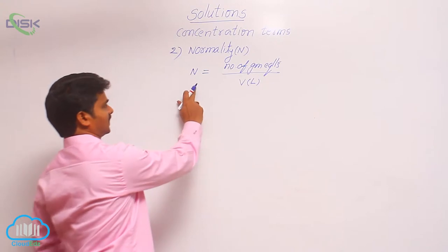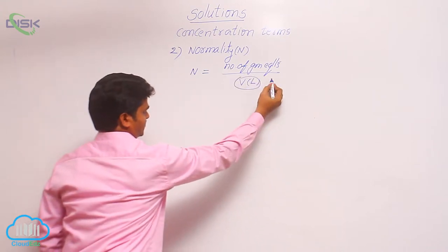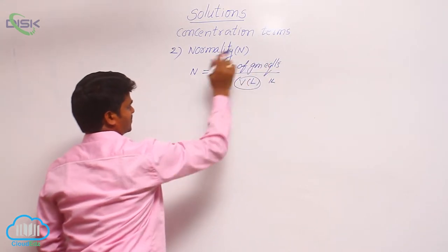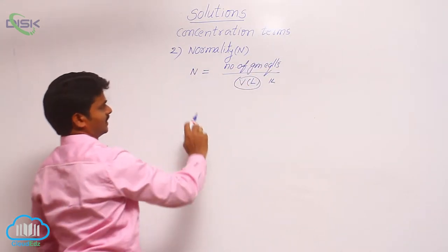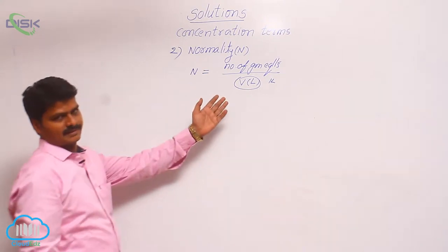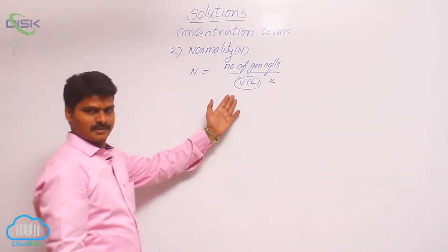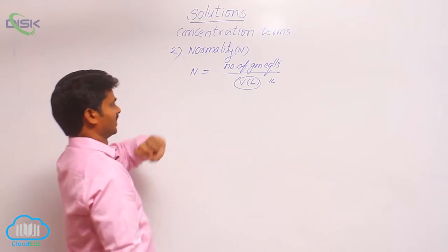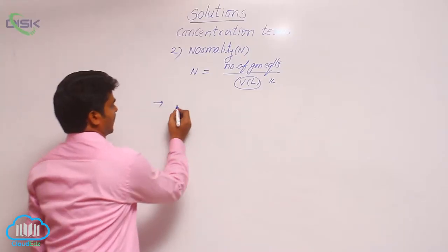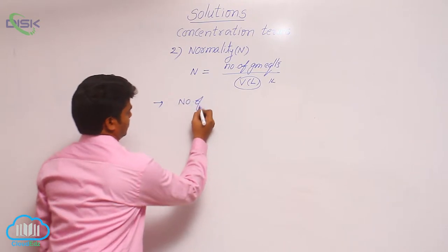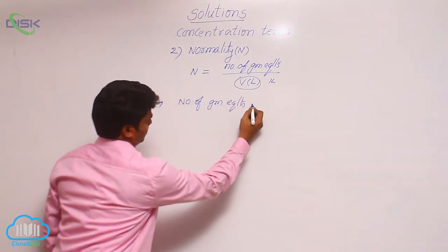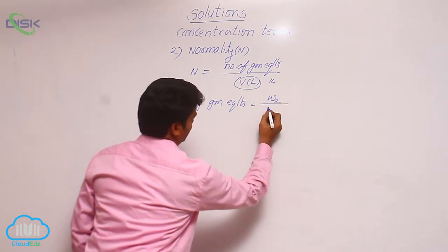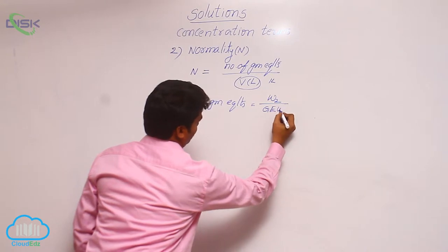The definition for normality comes from its formula. If V is taken as 1 liter, then the number of gram equivalents present in the solution is called normality. So, the number of gram equivalents of solute present in 1 liter of solution is called normality. Number of gram equivalents is equal to weight of solute divided by gram equivalent weight of solute.